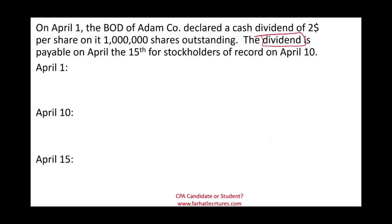When it comes to dividend, we have three dates to be aware of. In this exercise, we have three dates: April 1st, April 10th, and April 15th. You need to know what happened on each of these dates and what the journal entry is — the meaning of April 1st, April 10th, and April 15th. There is a name for each of these dates and something you have to do on that date. The best way to illustrate this is to look at an example.